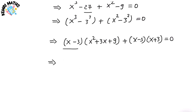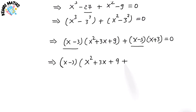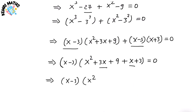Now I'm going to take out the common factor (x − 3), so the equation becomes (x − 3) times (x² + 3x + 9 + x + 3) = 0, which simplifies to (x − 3)(x² + 4x + 12) = 0.